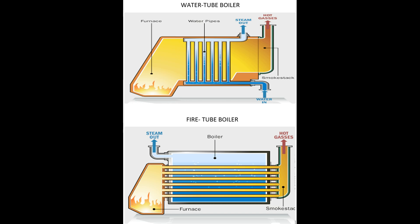A fire tube boiler was more common in the 1800s. It consists of a tank of water perforated with pipes. Hot gases from a coal or wood fire run through the pipes to heat the water in the tank. In a fire tube boiler, the entire tank is under pressure, so if the tank bursts, it creates a major explosion.